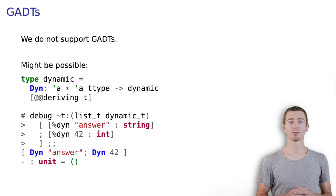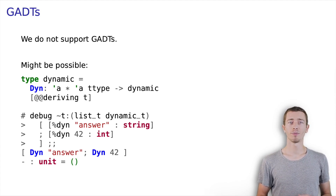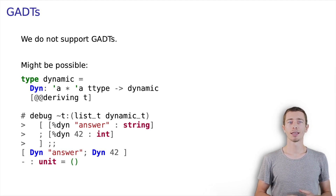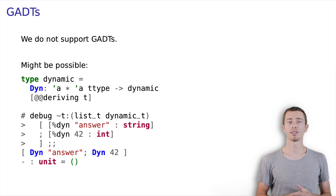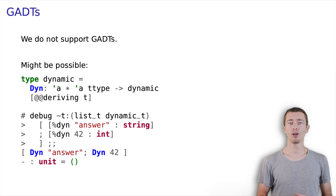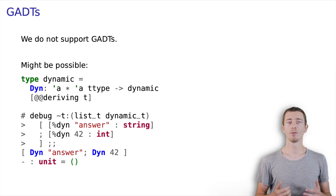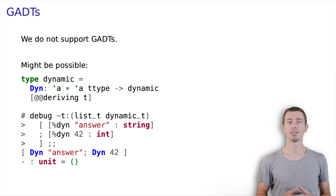Another problem arises from GADTs. It would be useful to have runtime representations for some of them. Let's take this dynamic as an example — it provides a generic box for values and their runtime type representation. Can we have a representation for dynamic and use it to handle heterogeneous lists? My intuition says yes. However, I'm not sure how an introspective xtype representation for this GADT should look like. Also, I think that we cannot support all possible GADTs. Similarly, we probably run into problems with module types.